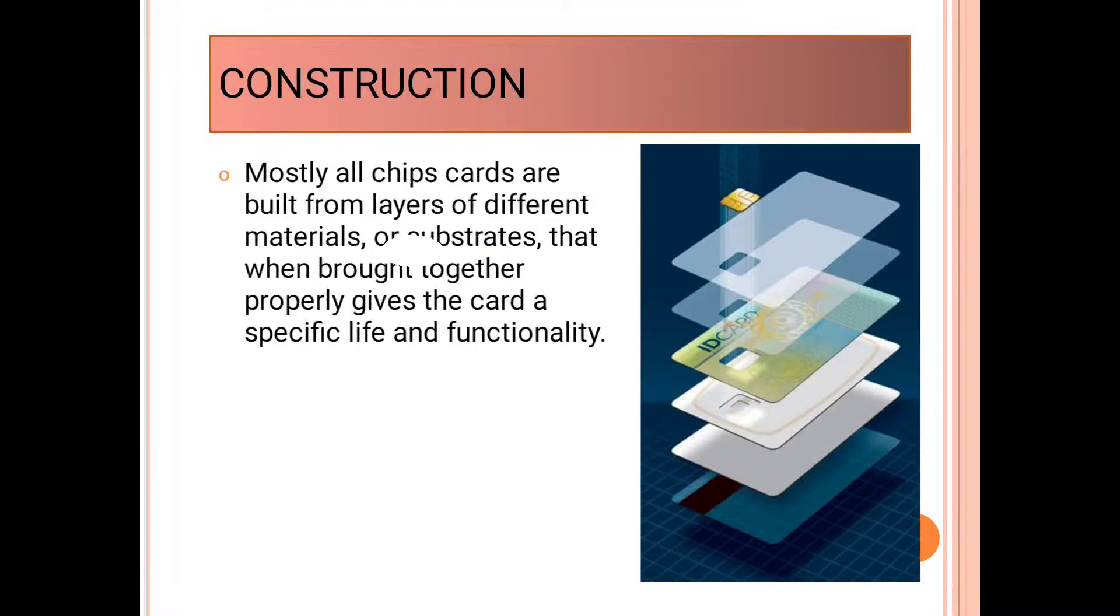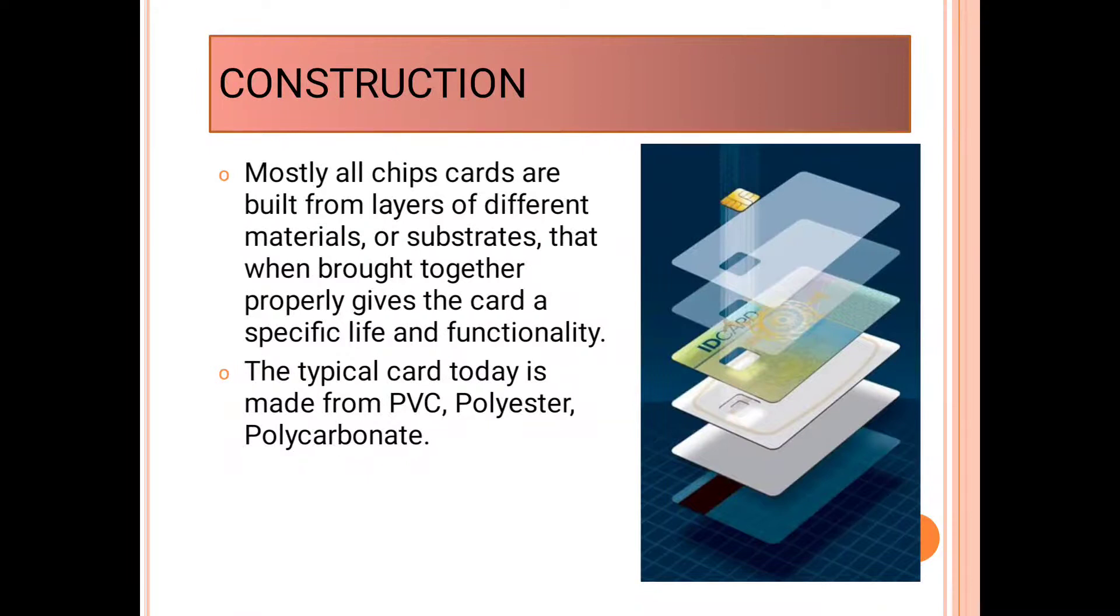Next is construction of smart card. Mostly, all chip cards are built from layers of different materials or substrates that when brought together properly gives the card a specific life and functionality. As in the picture is given, the typical card today is made from PVC, polyester or polycarbonate. The 3 by 5 mm security chip is embedded in the card.